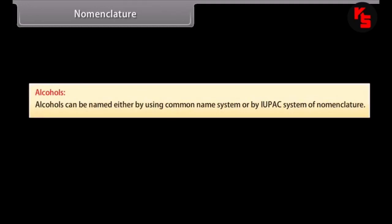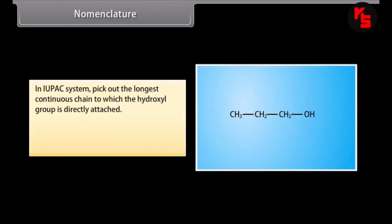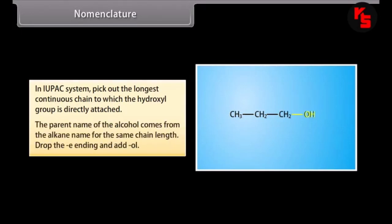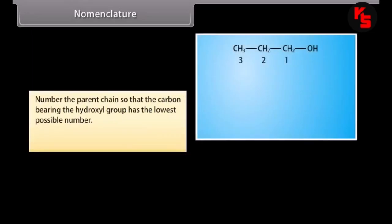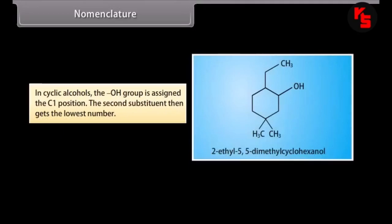Alcohols can be named either by using the common name system or by the IUPAC system of nomenclature. In the common name system, alcohol is named by listing the alkyl group and adding the word alcohol. In the IUPAC system, pick out the longest continuous chain to which the hydroxyl group is directly attached. Drop the -e ending and add -ol. Number the parent chain so that the carbon bearing the hydroxyl group has the lowest possible number. For example, 2-methyl-2-propanol. In cyclic alcohols, the hydroxyl group is assigned the C1 position.